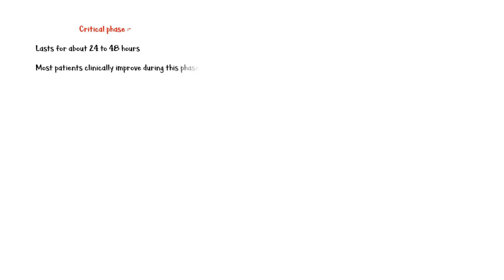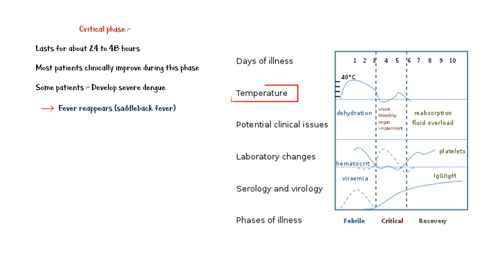The critical phase usually lasts for about 24–48 hours. Most patients clinically improve during this phase; however, some individuals may progress into severe Dengue. In these patients, fever appears again — this pattern is known as saddleback fever. A graph shows the pattern of fever during the different phases of the infection.